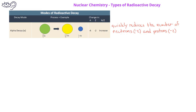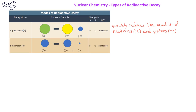Another common decay process is beta decay. For example, when radium-228 undergoes beta decay, a beta particle is emitted, which has a mass number of 0 and an atomic number, or charge, of negative 1. Beta decay changes a neutron into a proton in the nucleus. The daughter nuclide has the same mass number, but the atomic number increases by 1.